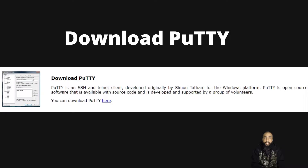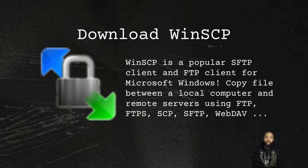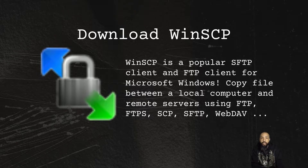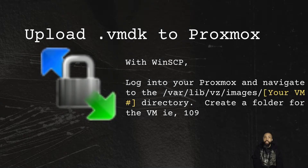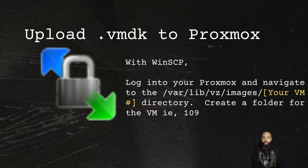You're going to need to download PuTTY — PuTTY is a SSH/Telnet client originally developed for the Windows platform, it's open source and supported by a group of volunteers. You're also going to need WinSCP — WinSCP is a popular SFTP client for Microsoft Windows that copies files between your local computer and remote servers. We're going to use it to upload the VMDK to Proxmox.